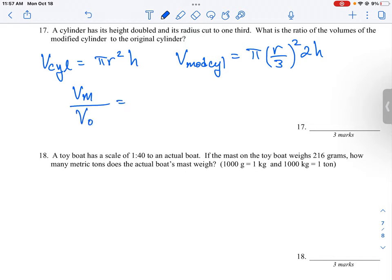It's going to just be the ratio of those two expressions. So this is going to be pi r squared over 9 times 2h divided by pi r squared h.